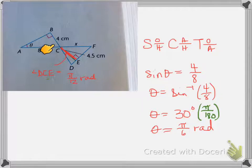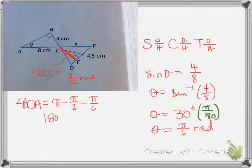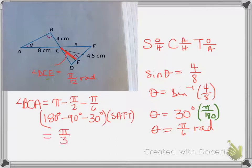Why is that the case? Well, when you think about it, the sum of all of these has to equal pi. So, pi minus pi over 2 is pi over 2, pi over 2 minus pi over 6, it leaves us with pi over 3. So, angle BCA is equal to pi minus pi over 2 minus pi over 6, using SATT. We find out that the answer to this is going to be pi over 3, and that's the value of BCA as well as DCF.